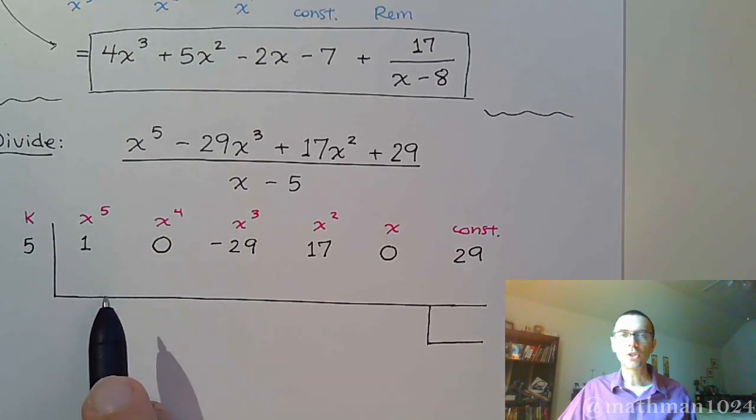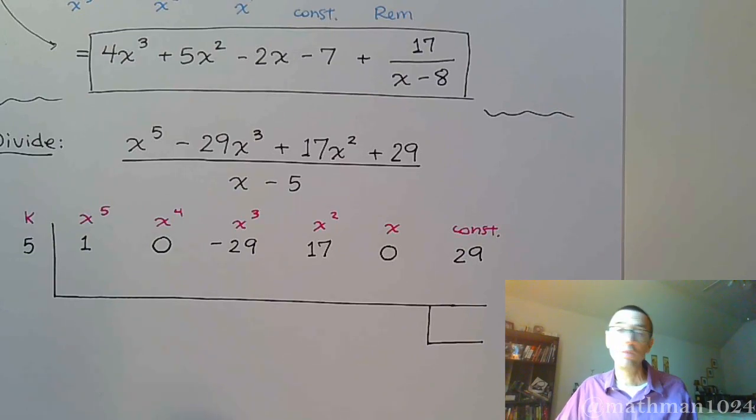So these 0s are just placeholders. Do we have to have them? Yes. If you don't have them, it means something different. Like if I were to say the number 105, right? 1, 0, 5, that 0 in the 10 spot means I don't have any 10s. But if I don't write it, it means a completely different number.